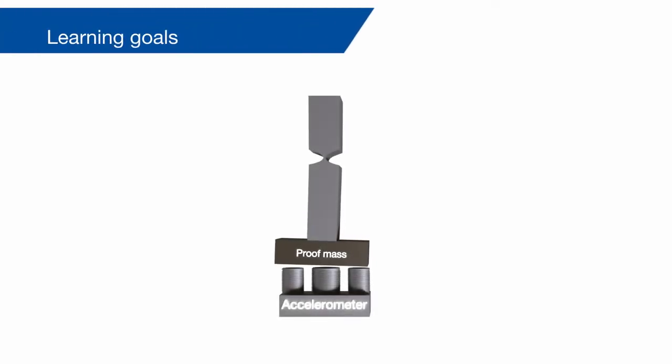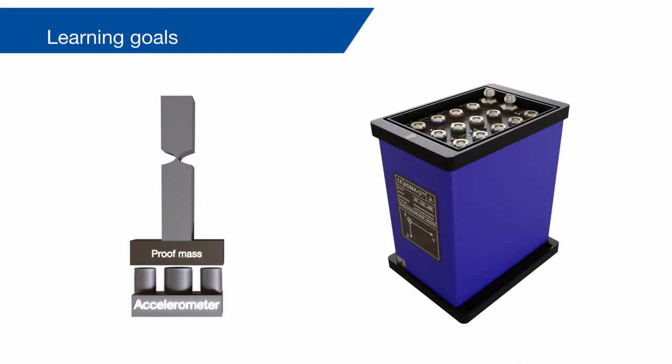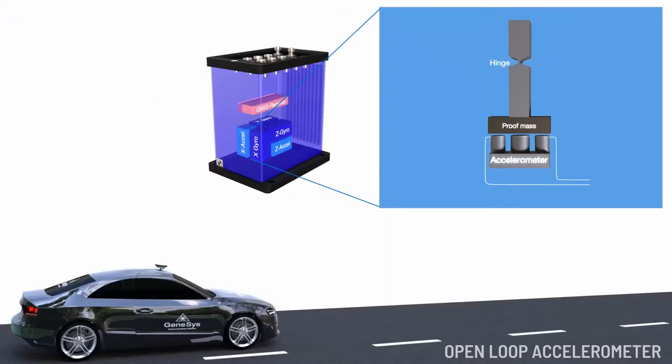This video shows the function of open-loop accelerometers which are integrated in our ADMA systems. An open-loop accelerometer consists of a proof mass swinging at a hinge. Below the proof mass you find an electromagnetic coil.